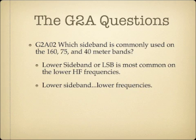Which sideband is commonly used on the 160, 75, and 40 meter bands? Lower sideband, or LSB, is most commonly used on the lower HF bands. If you remember that 20 meters and higher is upper sideband, then below 20 meters would be lower sideband — that should help.